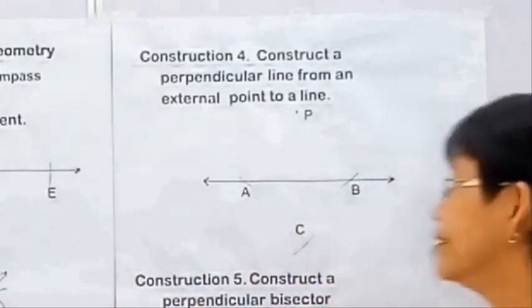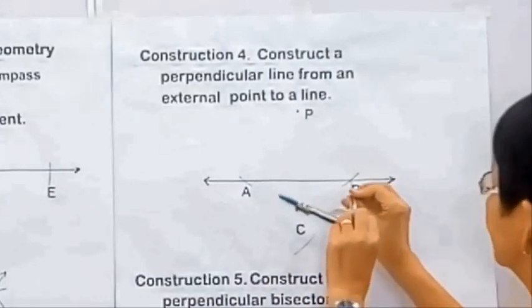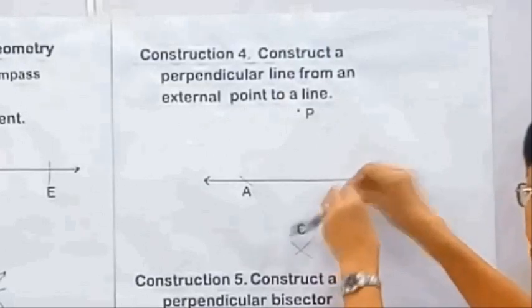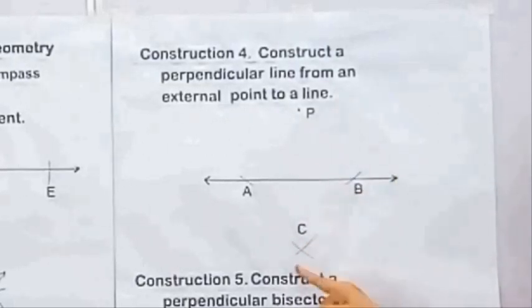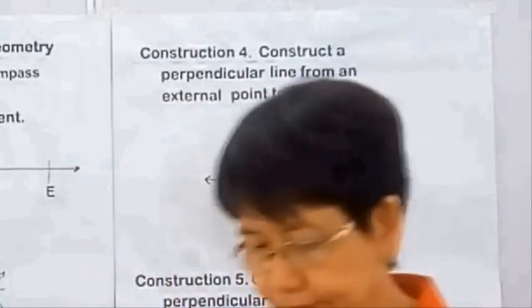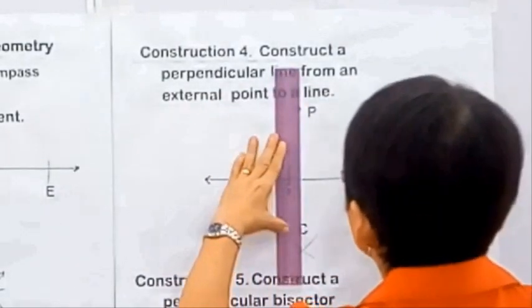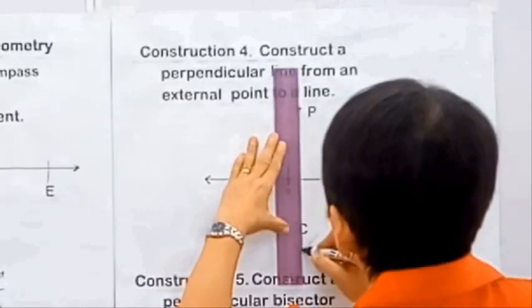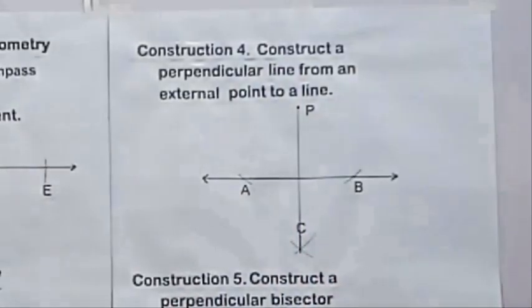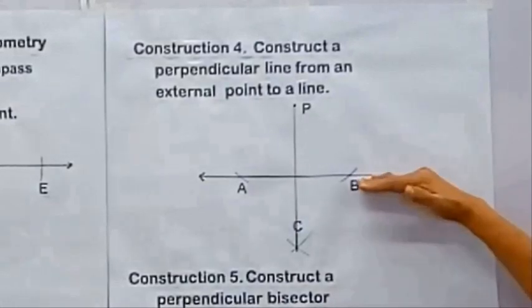From point B, we swing another arc below the line, intersecting at point C. P and C are then connected, and the line PC is the perpendicular line to line AB.